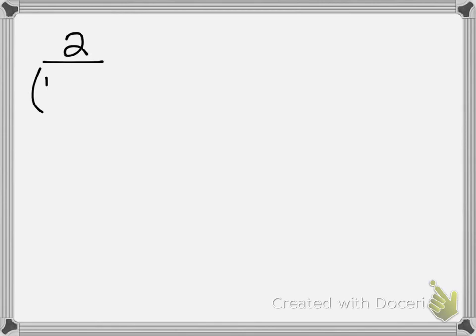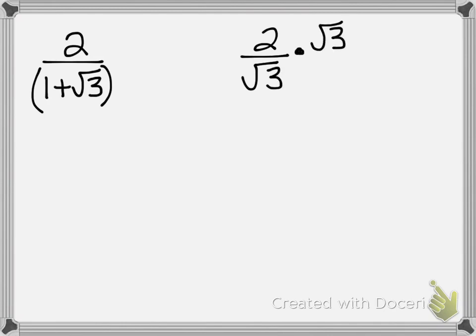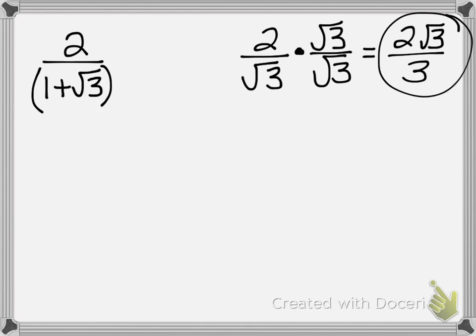Let's try another one: 2 over 1 plus the square root of 3. You have a binomial with a radical in the denominator — you can't get rid of that radical the way you would with a simple monomial. If it were just 2 over the square root of 3, you'd just multiply top and bottom by the square root of 3 and be done. But here you have to multiply top and bottom by the conjugate because it's a binomial.